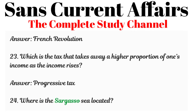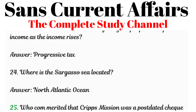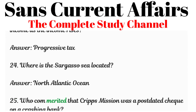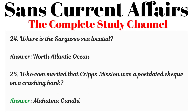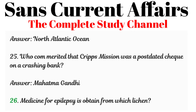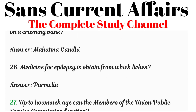Question 24: Where is the Sargasso Sea located? Answered: North Atlantic Ocean. Question 25: Who narrated that the Cripps Mission was a post-dated check on a crashing bank? Answered: Mahatma Gandhi. Question 26: Medicine for epilepsy is obtained from which lichen? Answered: Parmelia.